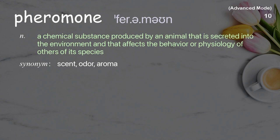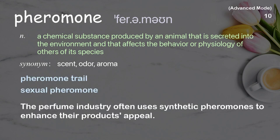Pheromone: A chemical substance produced by an animal that is secreted into the environment and that affects the behavior or physiology of others of its species. Examples: pheromone trail, sexual pheromone. The perfume industry often uses synthetic pheromones to enhance their product's appeal.